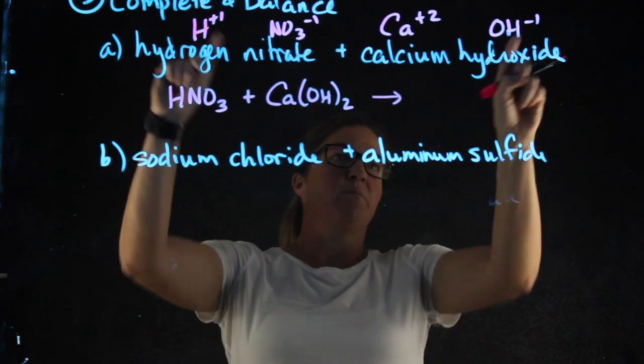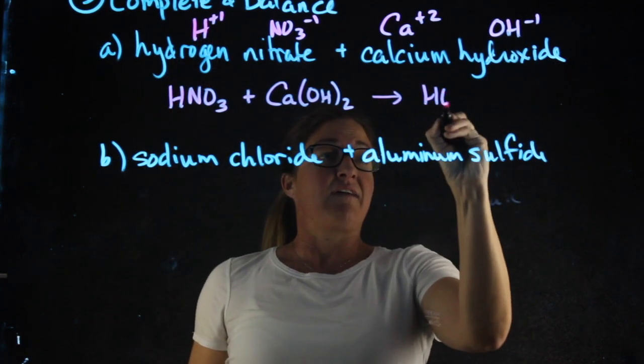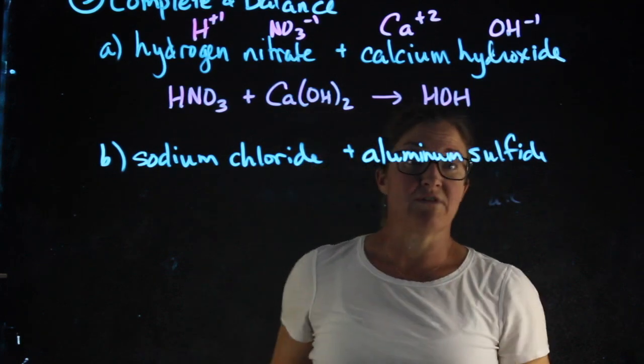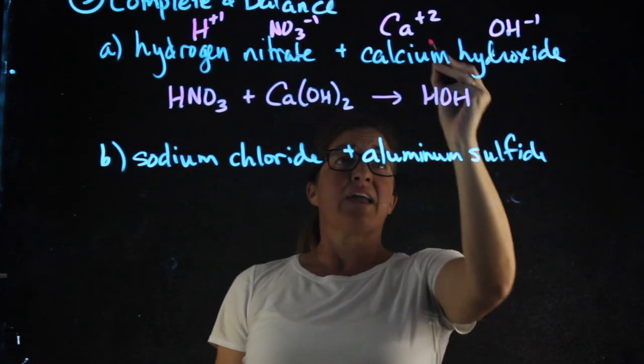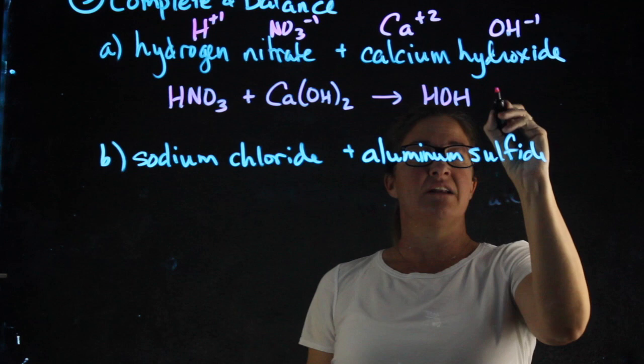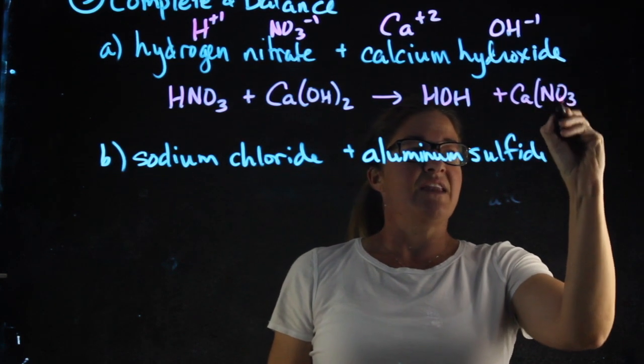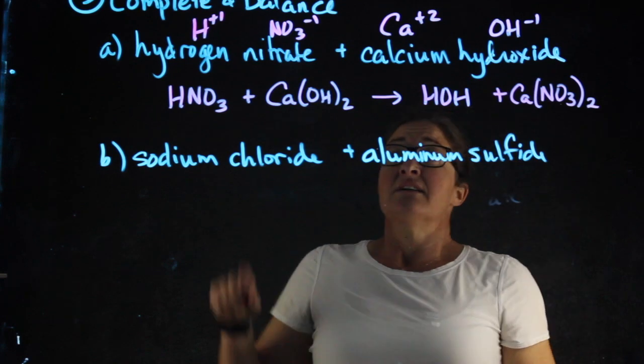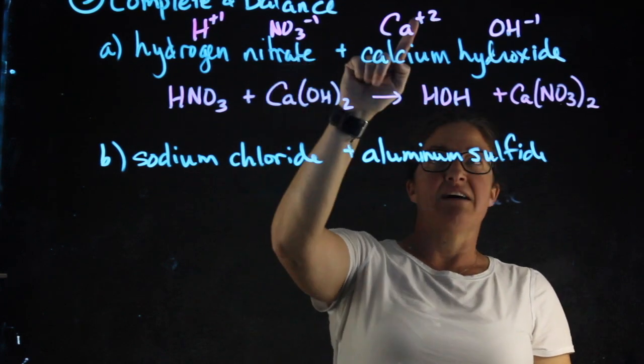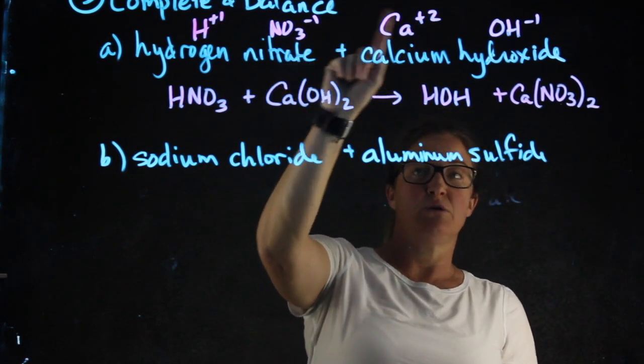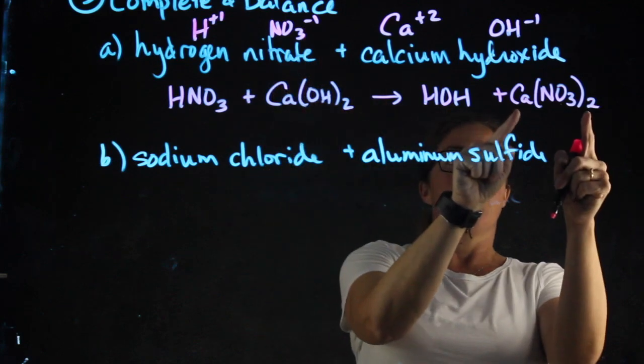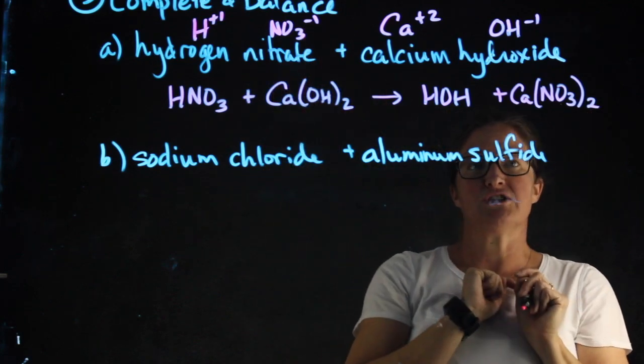On the other side, hydrogen will bond to the other negative, giving us HOH, or you can write it as H2O. Calcium will now bond with the nitrate, and it's important to put the positive charge first and the negative charge second. Since calcium is a plus two and nitrate's a minus one, we end with Ca(NO3)2.